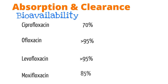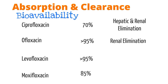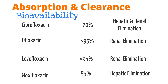Though the fluoroquinolones are absorbed through the GI tract, they have different routes of elimination. Ofloxacin and levofloxacin are renally eliminated. Moxifloxacin is eliminated predominantly by the liver, and ciprofloxacin is commonly excreted by both pathways.